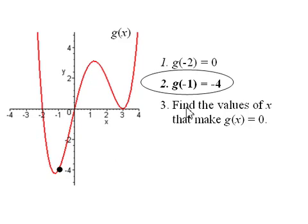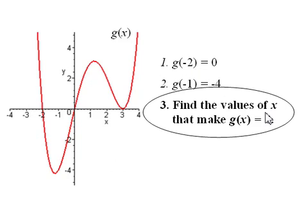Now, what if we want to find an input given an output? For instance, find all the values of x that make g of x equal to 0. Well, first thing we have to do is figure out where our outputs are equal to 0. Our outputs are going to be 0 any place on the x-axis. So, we actually have three spots where that happens. So, the values of x are negative 2, 0, and 3.